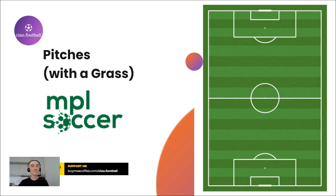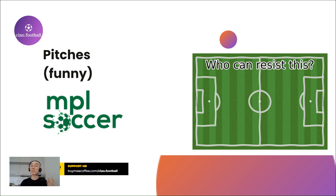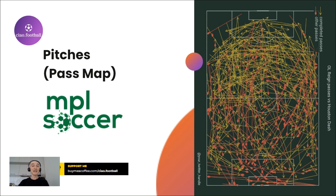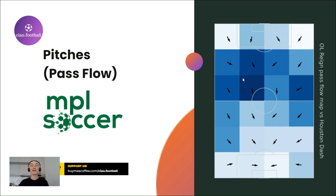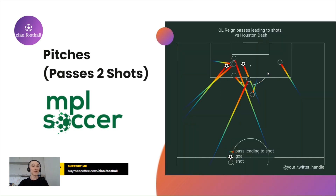Want to have a more playful pitch? MPL Soccer got you covered. Now let's have a look at what we can draw on top of the pitch. For example, a pass map with yellow arrows showing completed passes and red ones showing unsuccessful passes. Or we can create a pass flow depending on the pitch zone. MPL Soccer also allows you to visualize only passes that lead to shots.